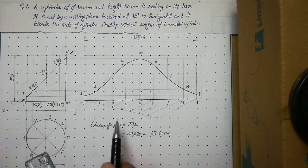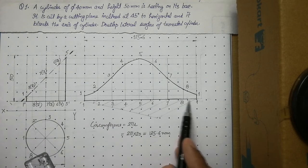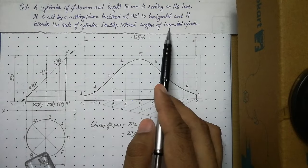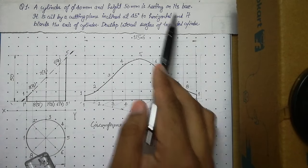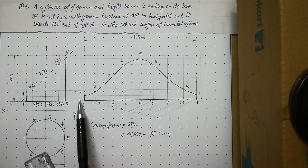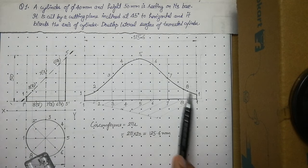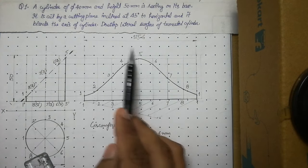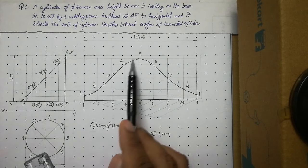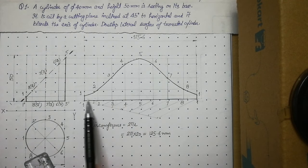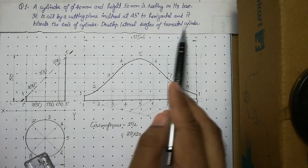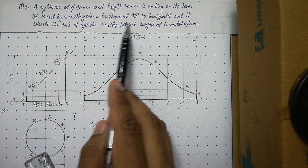We are now ready with our final answer. If you want to make a truncated cylinder for this data, you need a sheet of 125.6 by 50mm. On that sheet draw this development. The upper thin portion of the sheet is cut along this curve and removed, leaving only this particular surface. When you fold this surface you will get the truncated cylinder.